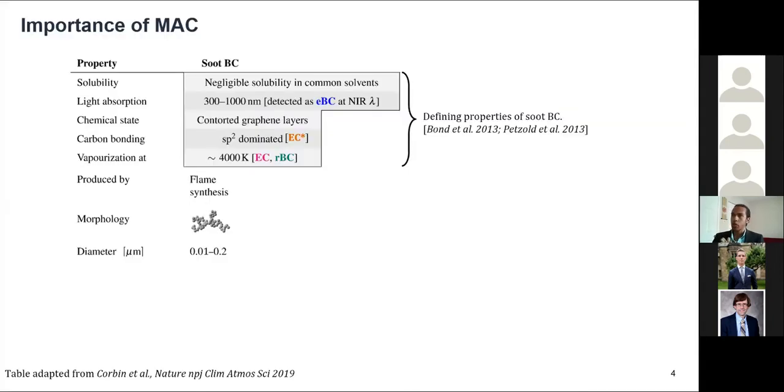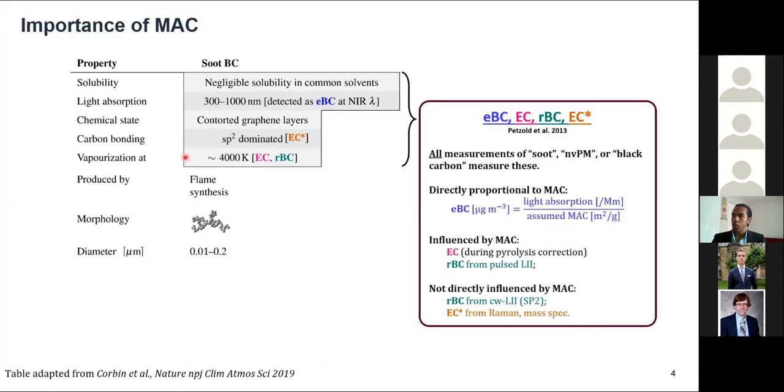And just to go through some of the key properties of soot, which are normally used for measurement, soot is insoluble, soot is highly light absorbing, soot is made up of contorted graphene layers, therefore has a sp2 dominated molecular structure, and therefore also vaporizes at very high temperatures. And when we measure soot, or sometimes NVPM, or sometimes black carbon, people usually mean the exact same material when they use these different terms.